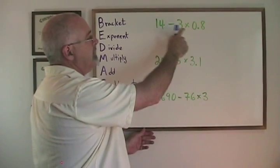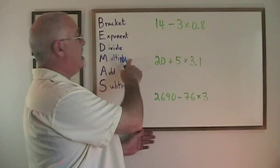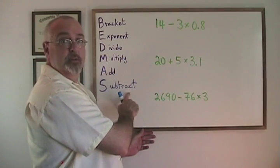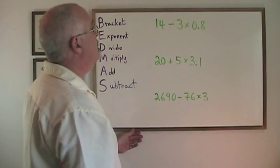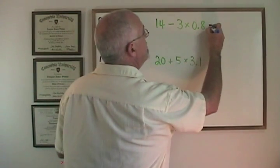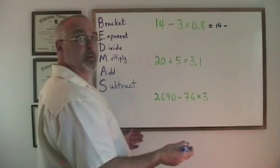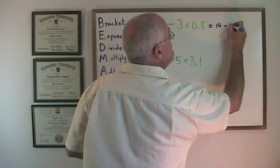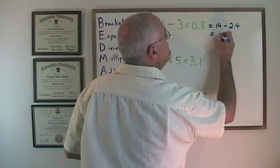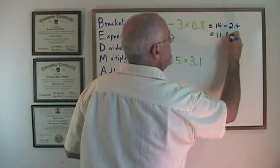We have a subtraction and a multiplication. We have to do multiplication before subtraction to follow the rule of BEDMAS. Therefore, we have 14 minus the answer to 3 times 0.8, which is 2.4, and our answer is 11.6.